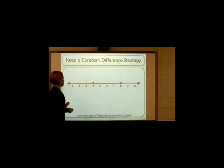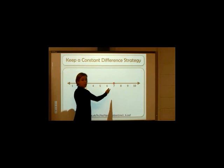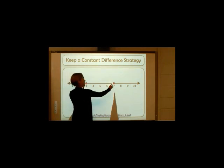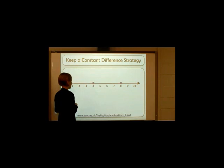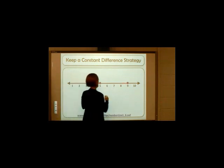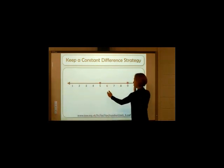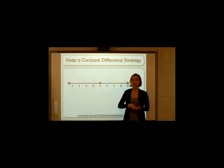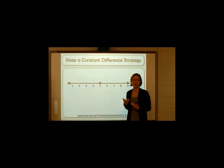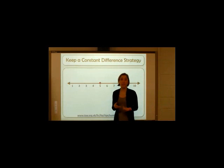Now, if I were to shift these two numbers one place to the left, or take away one from each of those numbers, I still have the same difference, even though my problem changes to seven minus three — my difference is still four. If I were to take those same two numbers, eight and four, and shift them one place to the right, or make them greater by one, I now have changed the problem to nine minus five, but I still have the difference of four. Let's try this with some other numbers to see if this will always work, using simple single-digit subtraction problems.